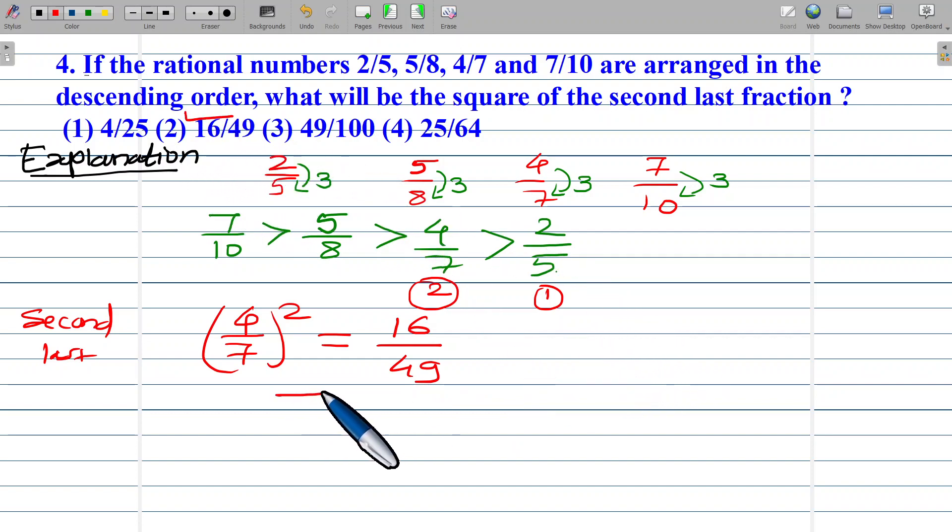This is the second alternative. Option number 2, 16 upon 49, is correct.